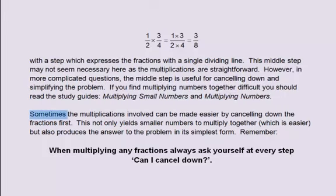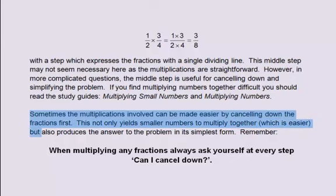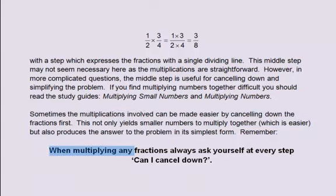Sometimes the multiplications involved can be made easier by cancelling down the fractions first. This not only yields smaller numbers to multiply together, which is easier, but also produces the answer in its simplest form. Remember, when multiplying any fractions, always ask yourself at every step: can I cancel down?